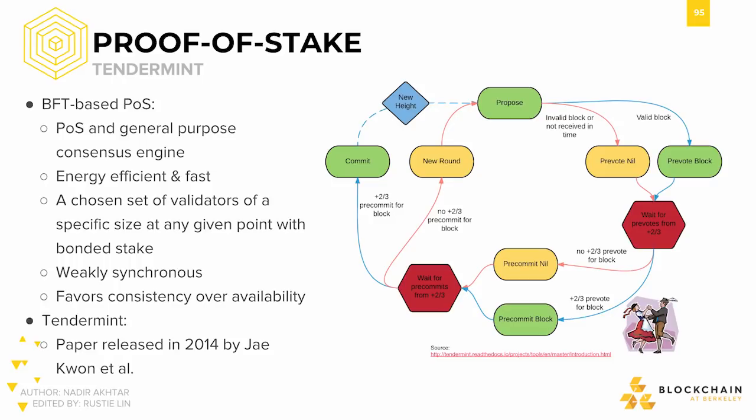In Tendermint, we have a globally known and predefined validator set. Consensus proceeds in three rounds, and at each round, more than two-thirds of the entire validator set must vote for the proposed block in order to proceed to the next round. Otherwise, if we don't hear from validators within a certain time, we count their vote as nil. And this reliance on a timeout makes Tendermint a weakly synchronous protocol rather than an asynchronous one.